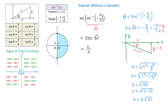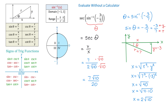Now let's substitute to find secant. We will replace r with 7 and x with 2 square root of 10. We can also rationalize the denominator by multiplying the numerator and the denominator by square root of 10. Here square root of 10 times square root of 10 is 10, and 10 times 2 is 20. The result will be 7 square root of 10 over 20. So secant of inverse sine of negative 3 over 7 equals 7 square root of 10 over 20.